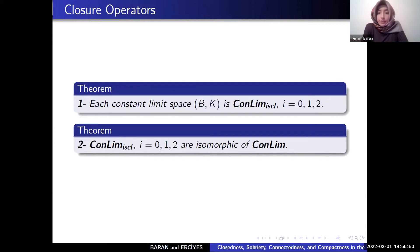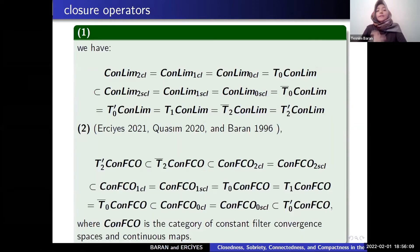Each constant limit space (B,K) is in conlim 0, 1, 2, STL and conlim 0, 1, 2, STL are isomorphic subcategories of conlimits. And we investigate a relationship among those categories.